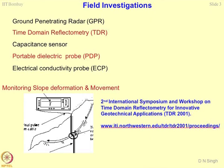One example I would like to cite is monitoring slope deformation and movement. This is one of the best techniques which can be employed for establishing slope deformation, movement, and landslides in real life. In this application, a fiber optics cable is embedded in a slope. Under any eventuality when failure takes place, what is going to happen to this fiber optic cable or the TDR cable?